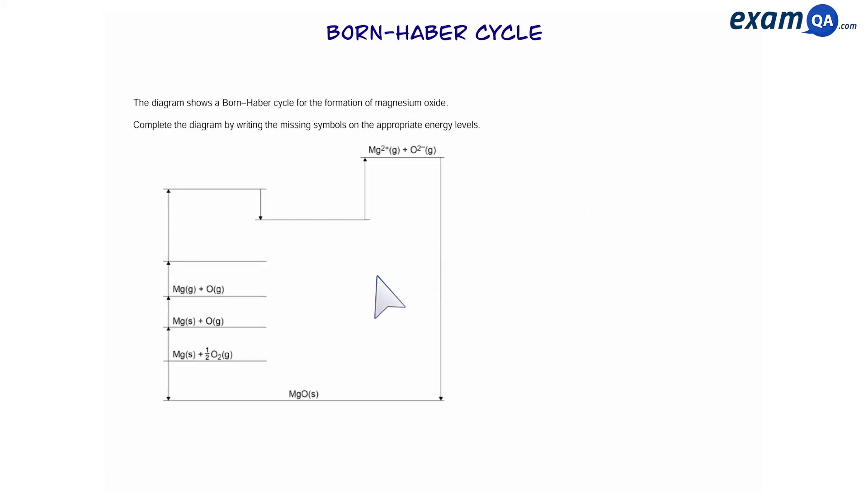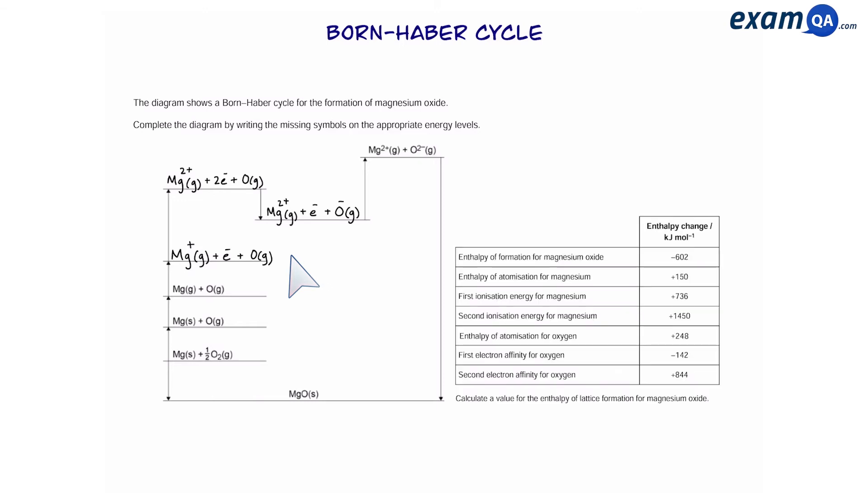OK, so here's the cycle once again and these are the missing energy levels that we had to fill in. OK, so next, they've given us some information regarding the enthalpy changes. And they want us to work out the lattice enthalpy of formation. Alright, so we're going to use the table to put in the enthalpy change with the appropriate arrows.